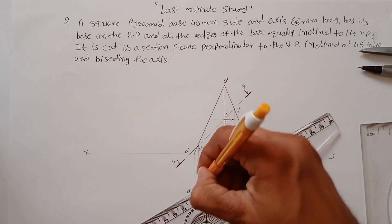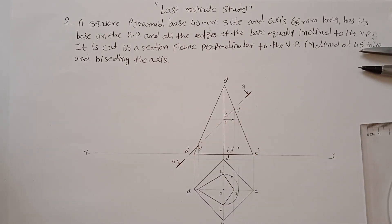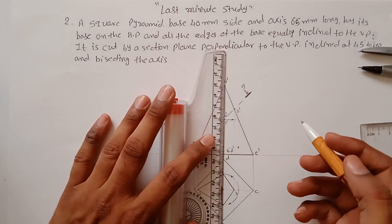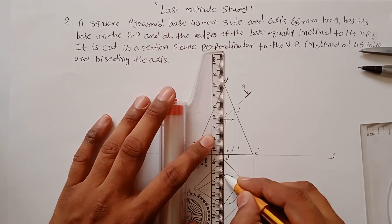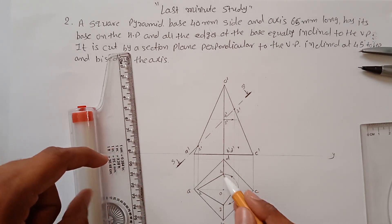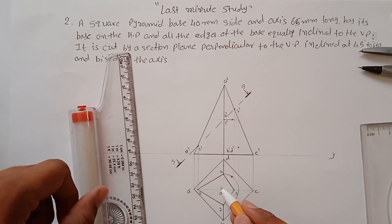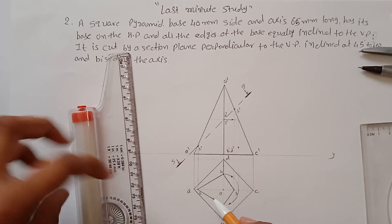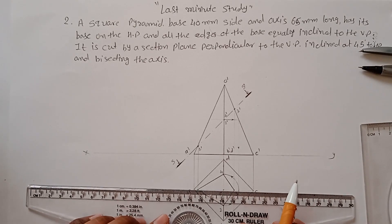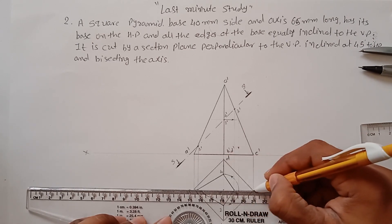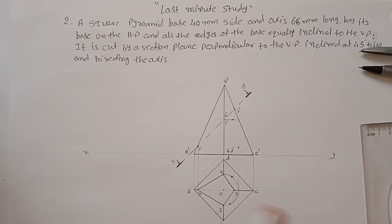This is the sectional top view as seen from above. Draw the visible sides with thick dark lines. The reason not to draw these lines initially is that after completing the sectional view you may need to erase them — a thick line leaves an impression and doesn't look clean. Finish this part after completing the section, but don't forget to draw it or the problem will be incomplete.